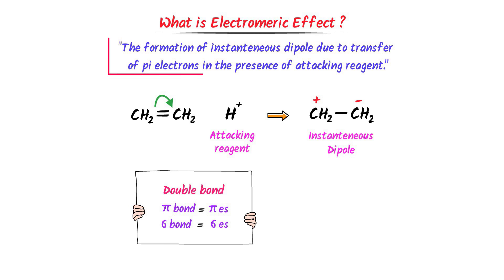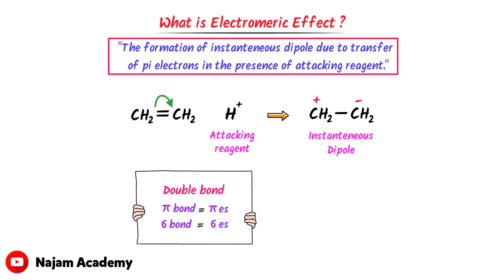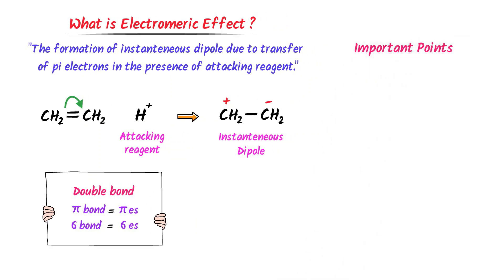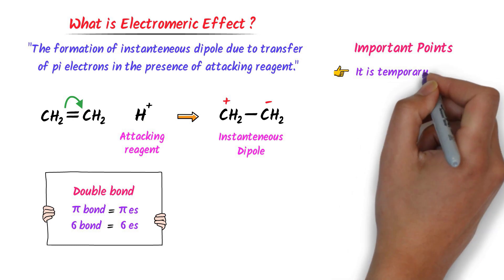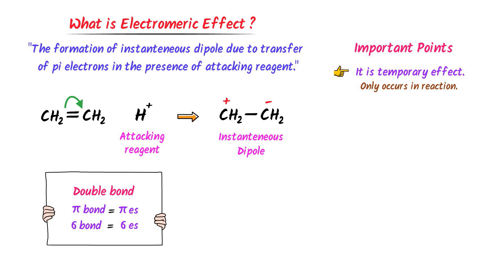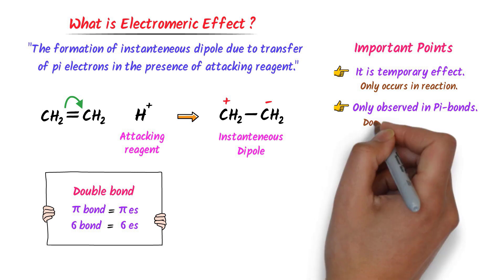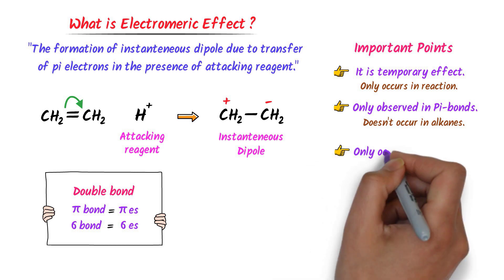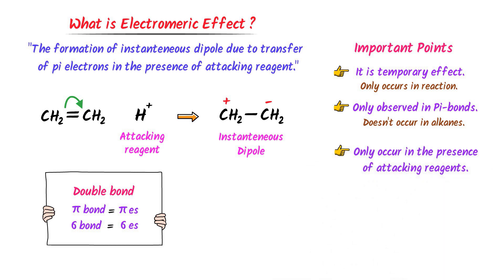Therefore, we define the electromeric effect as: the formation of an instant dipole due to the transfer of pi electrons in the presence of an attacking reagent. Also remember these important points: it is a temporary effect, meaning it only occurs during chemical reactions. Secondly, it is only observed in a pi bond — it does not occur in alkanes or single bonds. Thirdly, it only occurs in the presence of an attacking reagent.